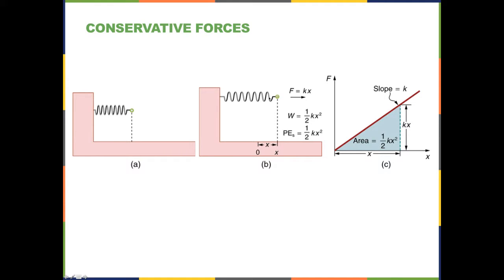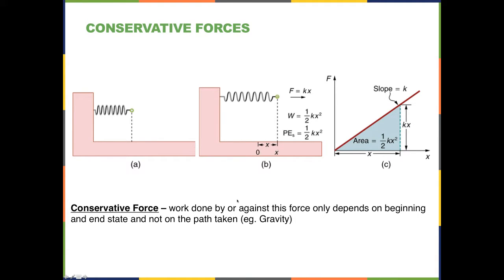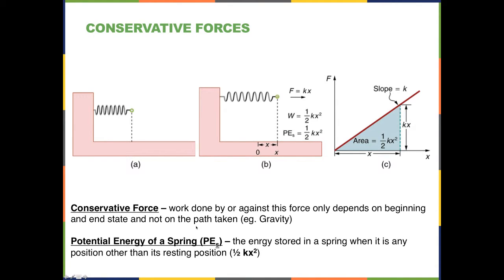Pulling a spring is not a constant force — it takes more and more force the further you pull. It's represented by a straight line on a force-displacement graph, so the area under the curve — a triangle — is the work done and equals the elastic potential energy stored. There's a conservation principle at work: the work done against this force depends only on the beginning and end state, not the path taken. The spring's potential energy is the energy stored at any position other than its rest position.